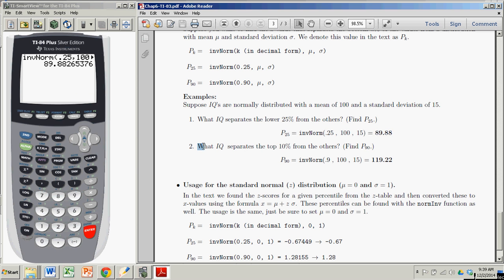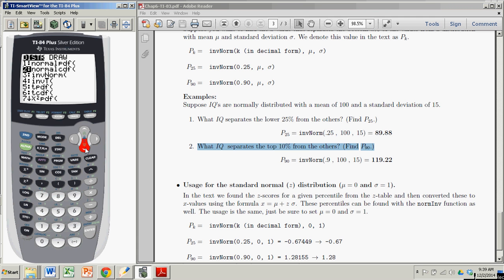Suppose I wanted to find the IQ that separates the top 10% from the others. Now I'm looking for P sub 90. Very easy. I go to second to get to my distribution menu. Go down to inverse norm, hit Enter.